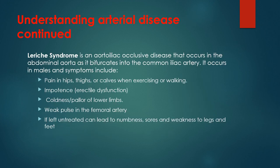Common locations of atherosclerotic disease include the common femoral bifurcation, carotid bifurcation, origins of the brachiocephalic vessel, origin of the visceral vessel, infrarenal aorta, iliac system, superficial femoral artery at the adductor canal, and popliteal trifurcation. Leriche syndrome is an aortoiliac occlusive disease occurring where the abdominal aorta bifurcates into the common iliac artery. It occurs in males, with symptoms including pain in hips, thighs, or calves when exercising, impotence or erectile dysfunction, coldness or pallor of lower limbs, and weak femoral pulses.